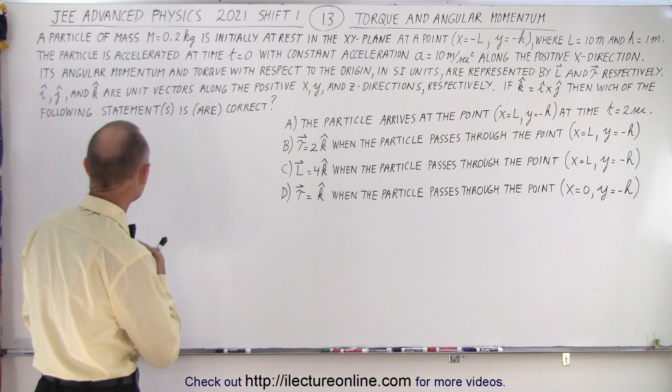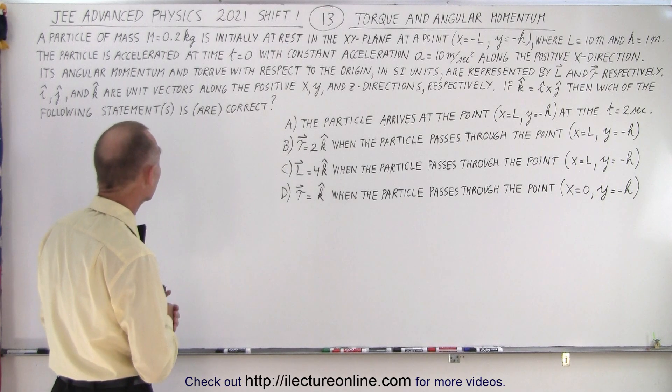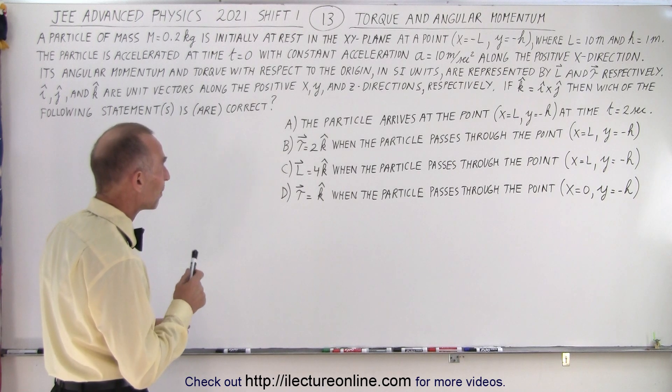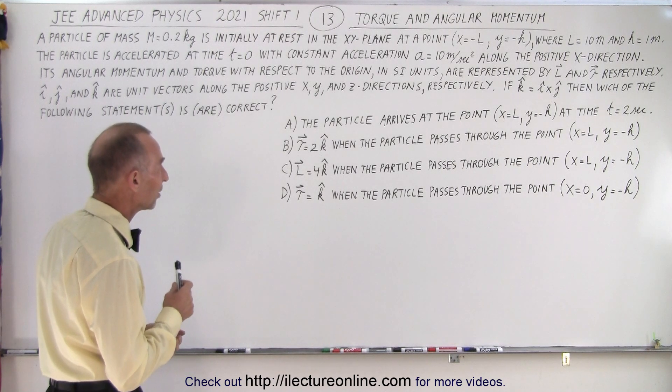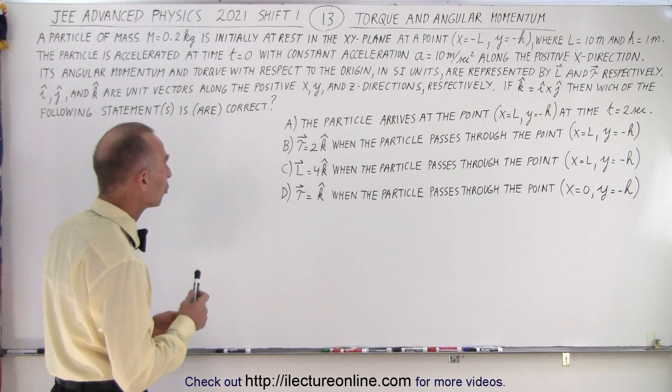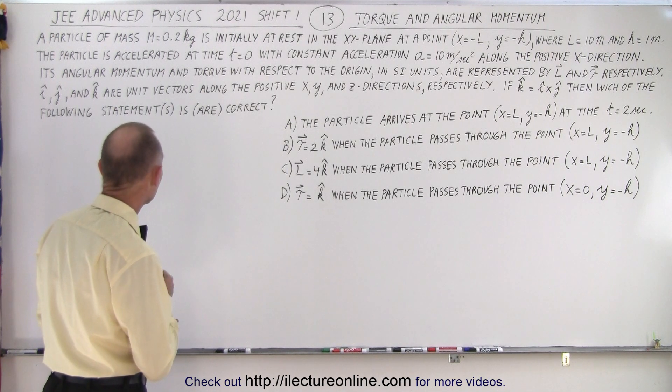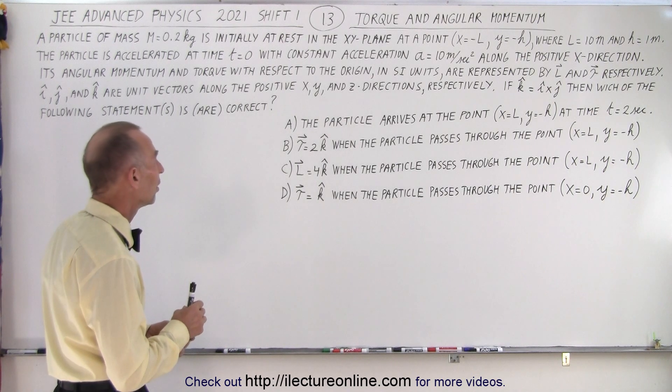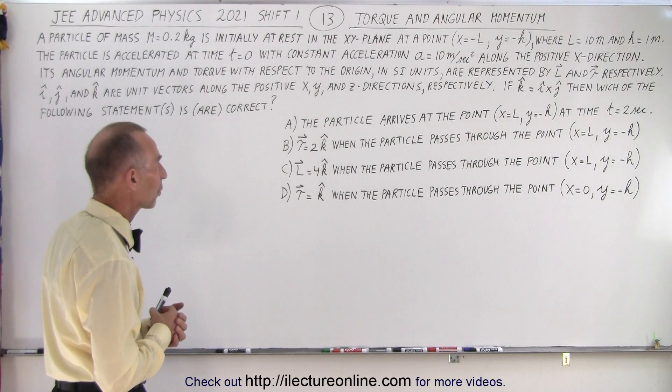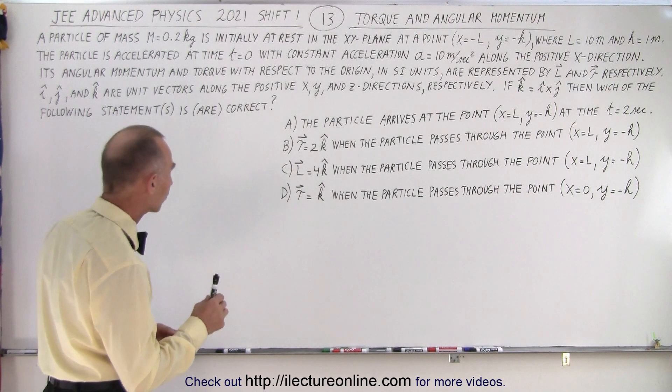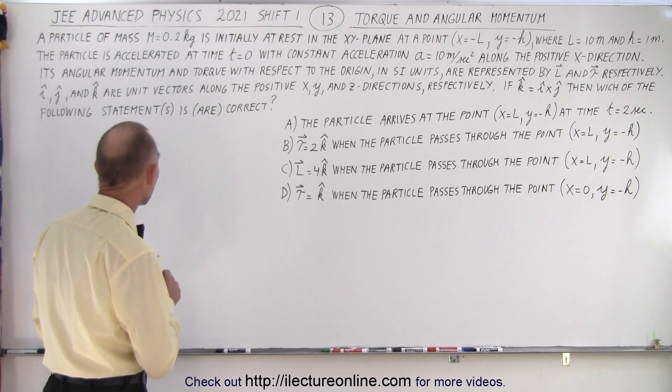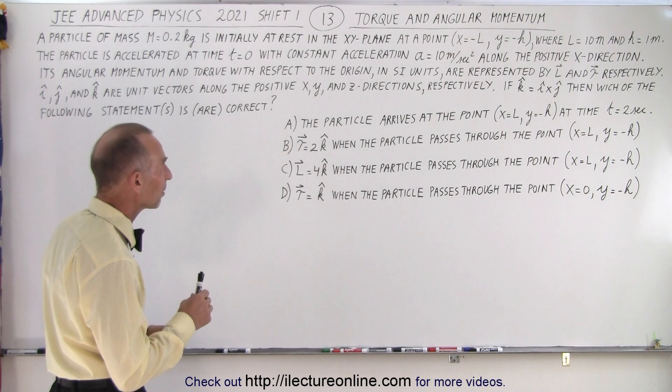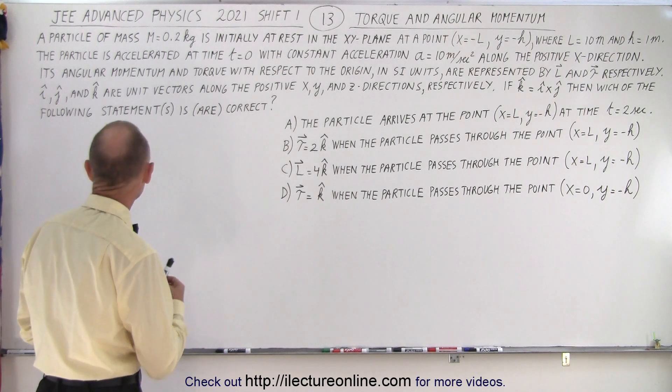It deals with torque and angular momentum. It says that a particle of mass m equals 0.2 kilograms is initially at rest in the xy plane at a point x equals minus l and y equals minus h, where l is 10 meters and h is 1 meter. The particle is accelerated at time t equals 0 with constant acceleration of 10 meters per second squared along the positive x direction. Its angular momentum and torque with respect to the origin in SI units are represented by l and the torque symbol respectively.